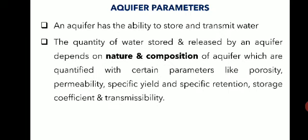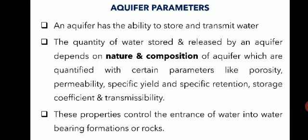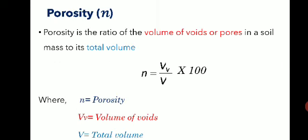The quantity of water we get from an aquifer depends on the nature and composition of the aquifer — that is, all these parameters decide it. These properties control the entrance of water into the water-bearing formations or rocks, and are very important for understanding the basic concepts of groundwater studies. Let us now discuss what is meant by porosity — the symbol for porosity is n.